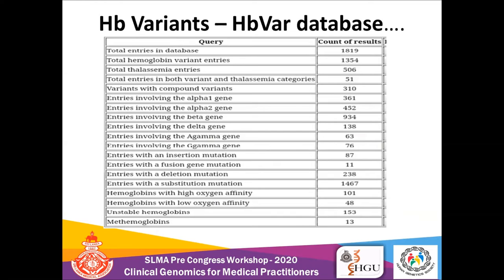This picture is taken from the up-to-date database on different entries regarding mutations affecting globin genes. There are 1,800 different entries, of which about 506 are thalassaemic entries, and there are 1,354 types of other haemoglobin variant entries. There are also 51 types of entries that give rise to a mixed picture of thalassemia plus other haemoglobinopathies — these are known as thalassaemic haemoglobinopathies.